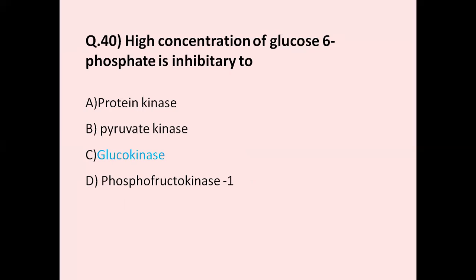Question number 40: High concentration of glucose-6-phosphate is inhibitory to — option A protein kinase, option B pyruvate kinase, option C glucokinase, option D phosphofructokinase. The correct answer is option C, glucokinase.